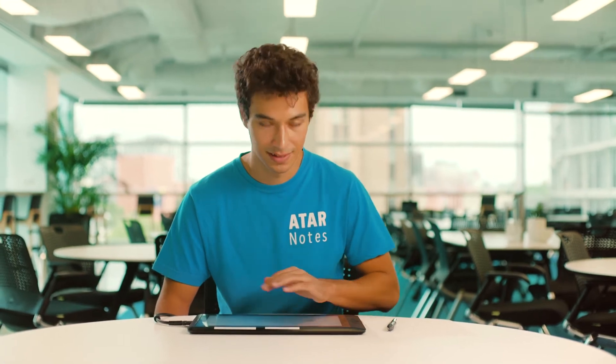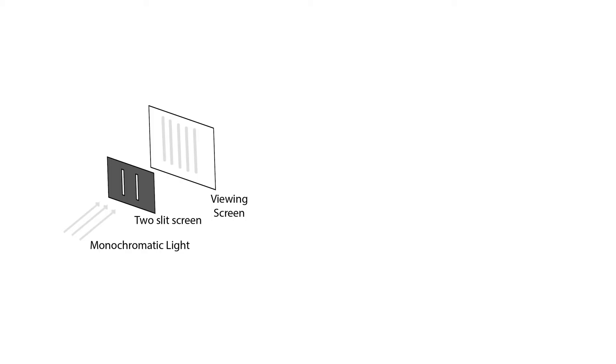So what Young essentially did - he had an apparatus looking something like this. He directed light, we prefer to use monochromatic light, but in Young's case, it was sunlight. He directed a beam of light onto a double slit.